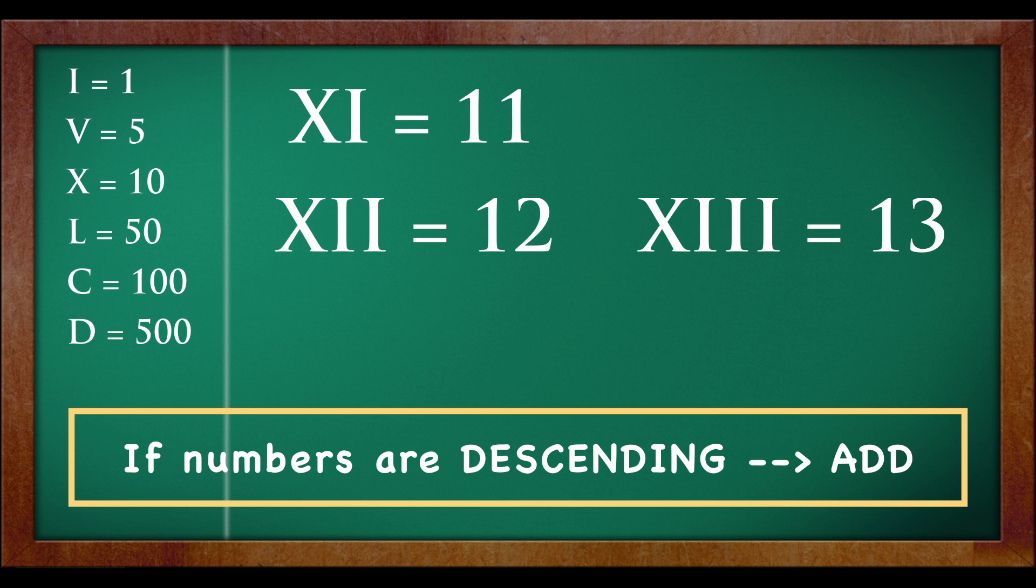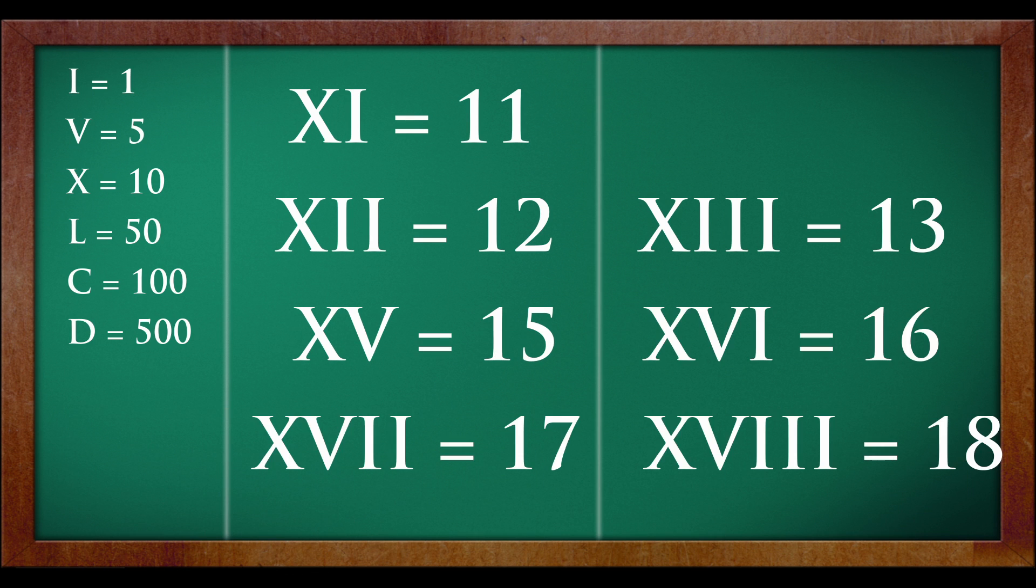Let's skip 14. 15 is XV. Because it's in descending order, we have to add. 10 plus 5 is equal to 15. Similarly, with 16, 17 and 18, we have to do the same method.